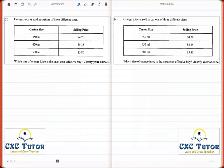We're asked which size of orange juice is the most cost-effective buy, and we're asked to justify our answer. One way to solve this question is to look for the juice that costs the least per milliliter, and so we don't get confused during our calculations, I'll label the juices accordingly: juice 1, juice 2, and juice 3.